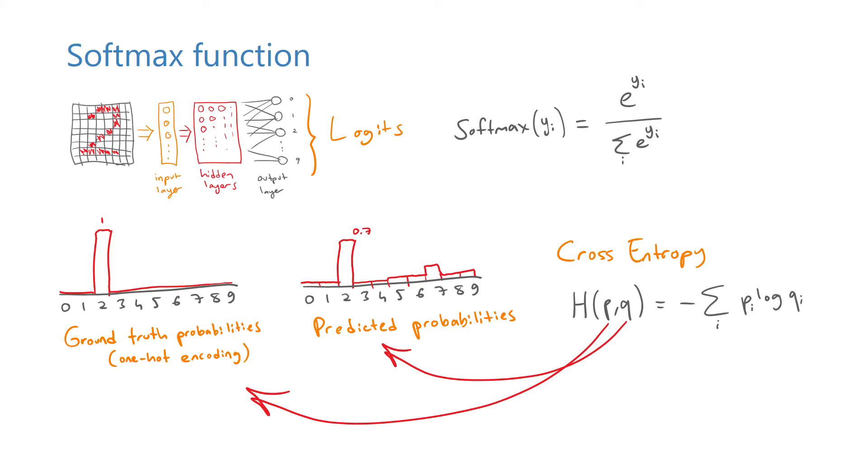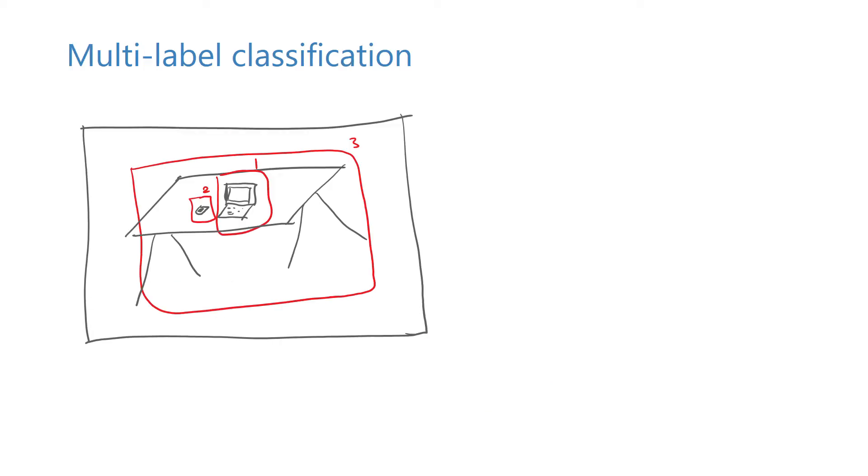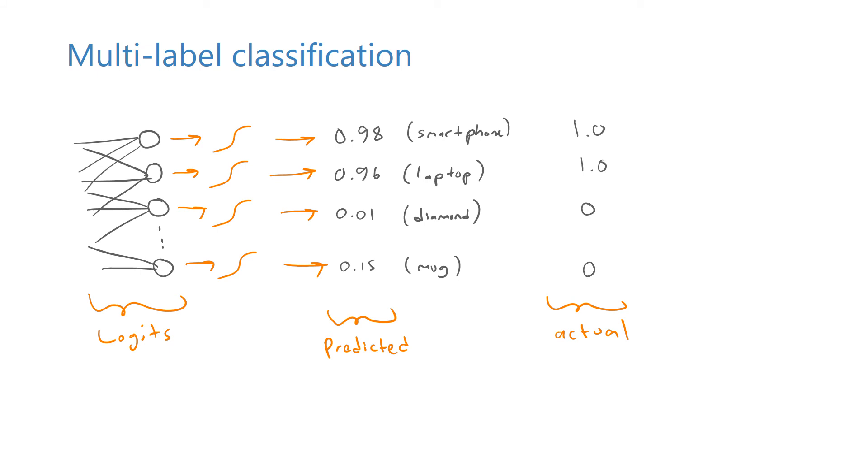Since the outputs of the softmax function always sum up to 1, it creates a competition between its inputs. When a neuron for one class gets a large value, it pushes all the other class probabilities down. This is a useful property when our class labels are mutually exclusive, but in some cases, each sample can have more than one label. For example, if you're detecting objects in pictures, one picture can contain both a laptop and a smartphone. In such cases, we can pass the logits through separate sigmoid functions instead of a single softmax, so that the probabilities don't necessarily sum up to 1.